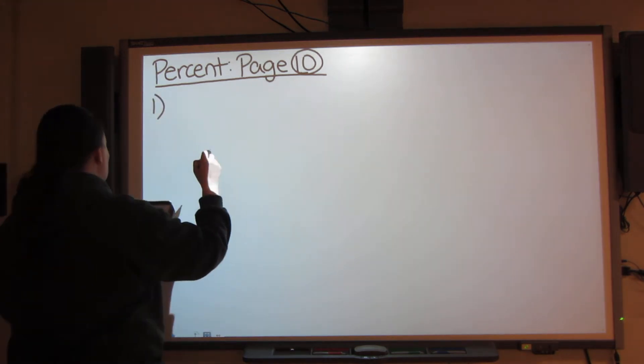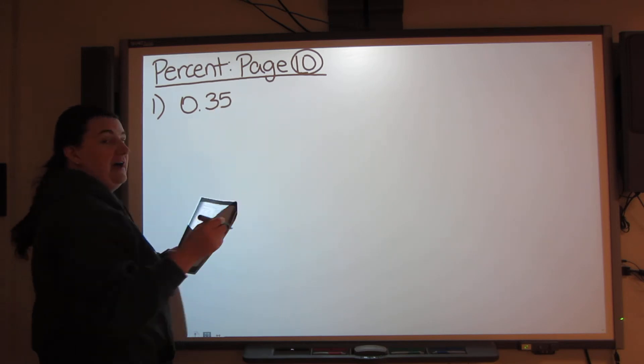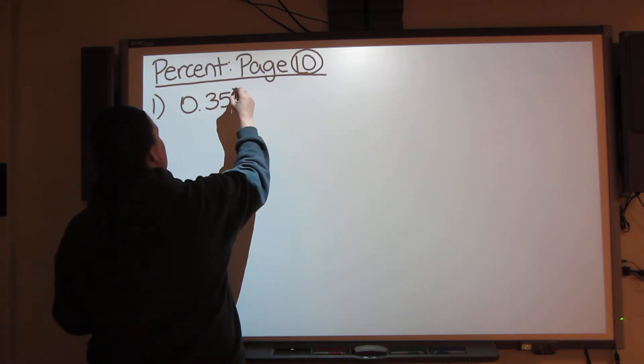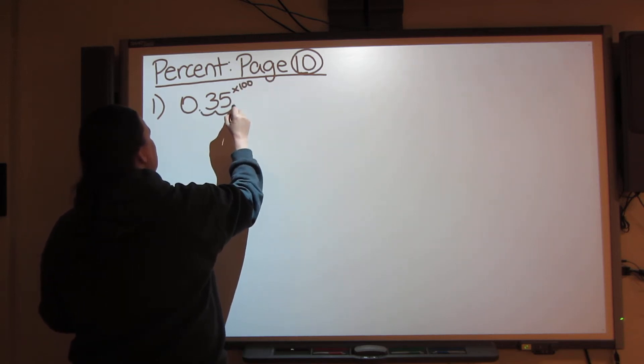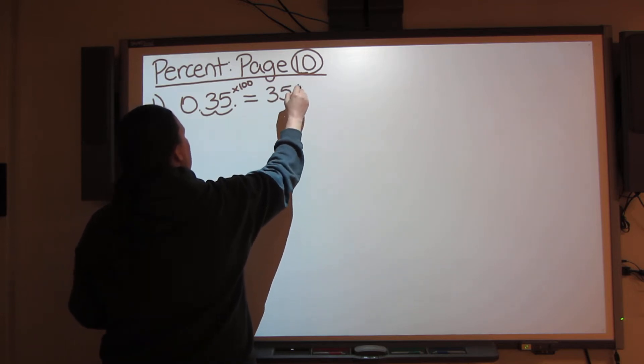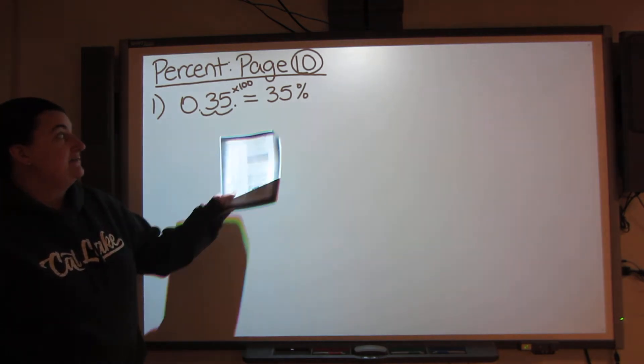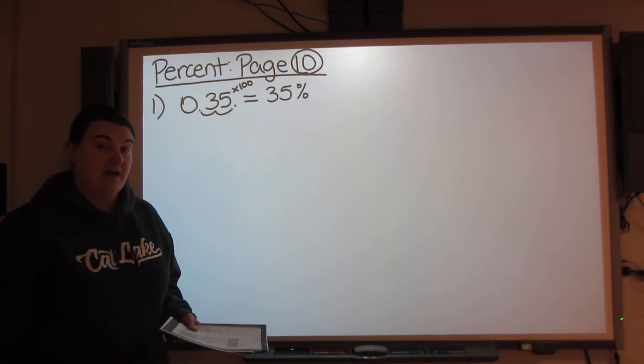So question number one, I have 0.35. To change that into a percent, I need to multiply by 100 and move that decimal over so that now I have 35 percent. Do I need to put the decimal after the 5? No, it does not change the value.